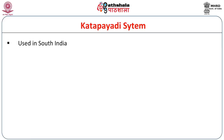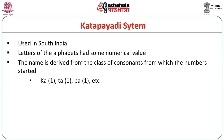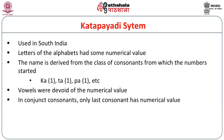In South India, a distinct method was used known as the Kattapayadi system. The name is derived from the letters from different classes of consonants. The letters of the alphabet had some numerical value, and the name is derived from the class of consonants from which the numbers started. Ka, Ta, Pa each stand for 1. Vowels were devoid of any numerical value — only consonants had number value. In conjunct consonants, only the last consonant has a numerical value; the first consonant has absolutely no value. The right-to-left arrangement is followed in this system.